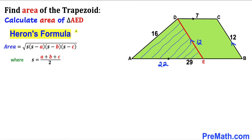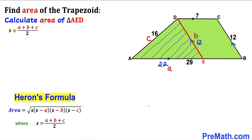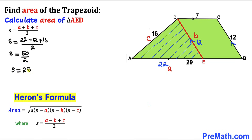We are going to use Heron's formula to calculate the area of this triangle. The area of the triangle is equal to the square root of S times (S minus a) times (S minus b) times (S minus c), where S equals (a plus b plus c) divided by 2, also called the semi-perimeter. Labeling the sides lowercase a, b, and c, S equals (22 plus 12 plus 16) divided by 2, giving us 50 over 2, so S equals 25.